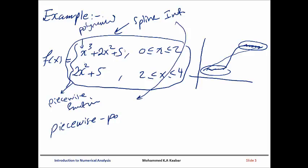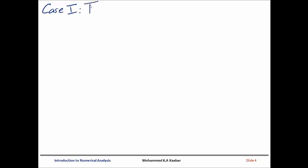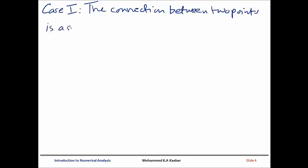As a result of spline interpolation you will have a piecewise function made up of polynomials. Therefore it is called piecewise polynomial approximation. Now let me give you a real example about linear spline interpolation, which is our topic today. The connection between two points is a straight red line, which is a linear function.